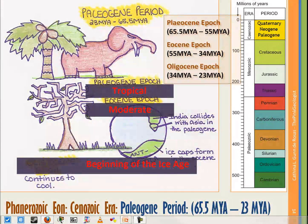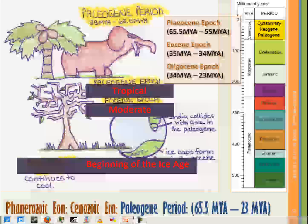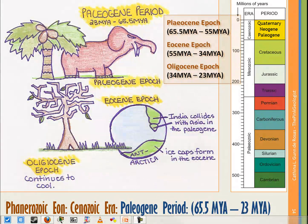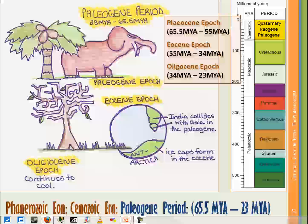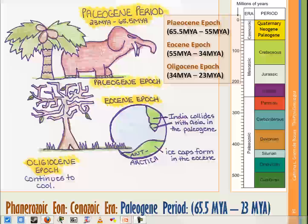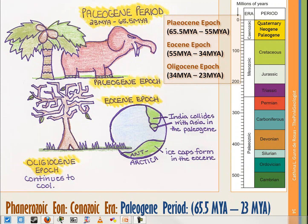Then we move to the Oligocene epoch, covering about 34 million years ago to about 23 million years ago. The climate is still somewhat warm but continues cooling. Mammals keep diversifying, and now the flowering plants have taken over — we see evidence of them everywhere throughout the Oligocene epoch.